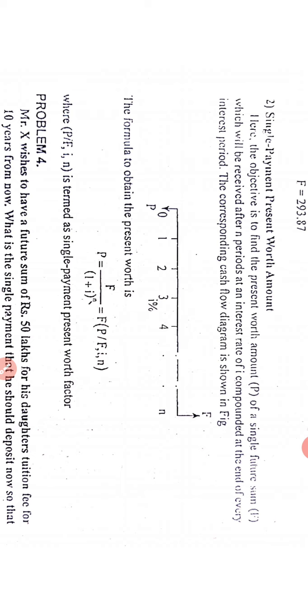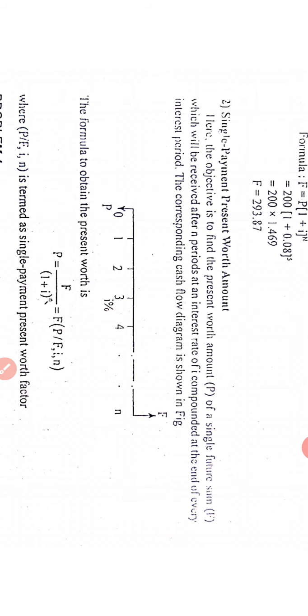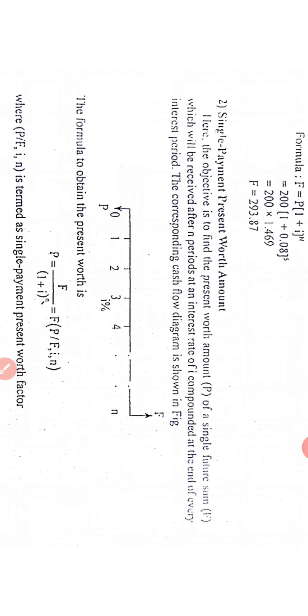Where P bar F comma i comma n is termed as a single payment present worth factor. Now to better understand this, we will take an example. Like, I am investing - I want 293 rupees at the end of five years. Suppose I want 293 rupees at the end of five years and the rate of interest is eight percent. So how much I have to invest today so that I can get 293 rupees at the end of five years?